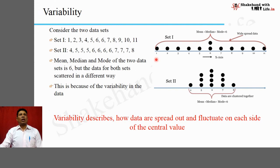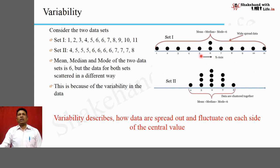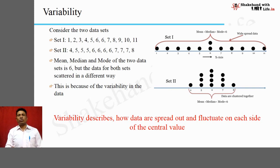To understand variability, look at this slide. There are two data sets. The first data set has data values that are widely spread, and the second data set has data values that are clustered together. But if you calculate the mean, median, and mode for these two data sets, you will find that the value is the same for both — it is 6 for set 1 and also 6 for set 2. The difference between the data values of set 1 and set 2 is the variability. Therefore, variability describes how data are spread out and fluctuate on each side of the central value.